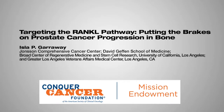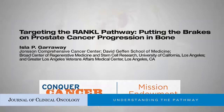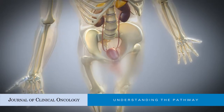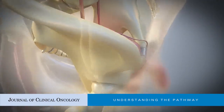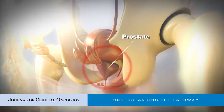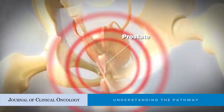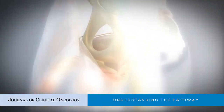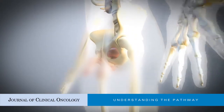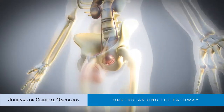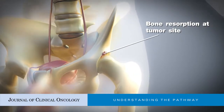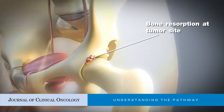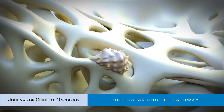Targeting the RANKL pathway: putting the brakes on prostate cancer progression in bone. The spread of prostate cancer to bone represents a critical turning point in disease progression and occurs in 90% of lethal cases. A majority of patients with metastatic castration-resistant prostate cancer develop bone metastases, which may bring a significant risk of skeletal-related events.